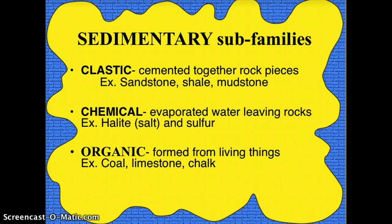There are three sub-families or groups. Clastic is the most common — that's when rock fragments or sediments are actually cemented or stuck together. Then we have chemical rocks, very similar to some of our minerals, where evaporated water leaves behind rocks or minerals, usually from a precipitate of a solution. And lastly are the organic sedimentaries, which are unique because they were rocks formed from things that were once alive.